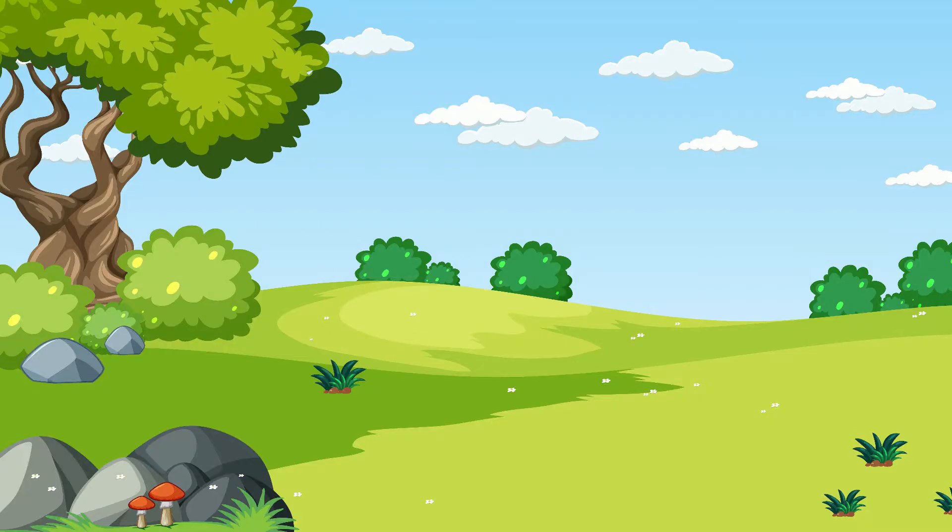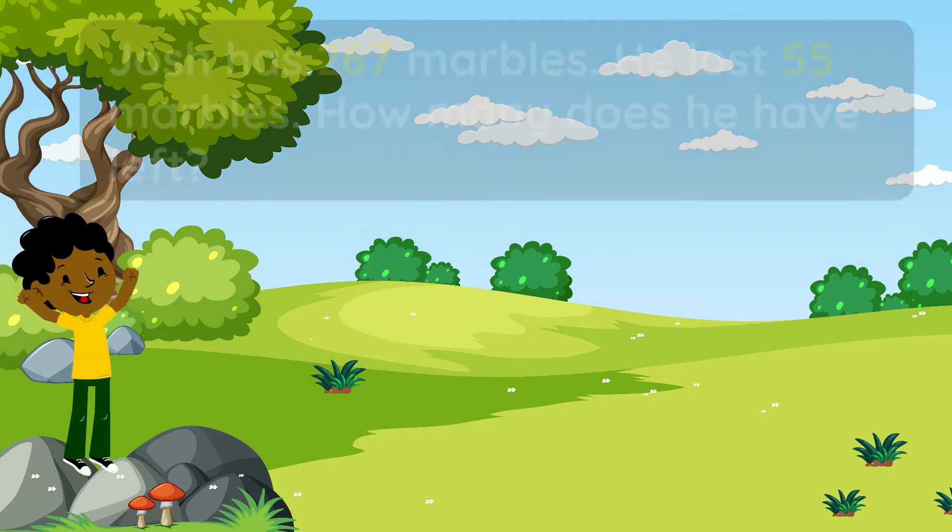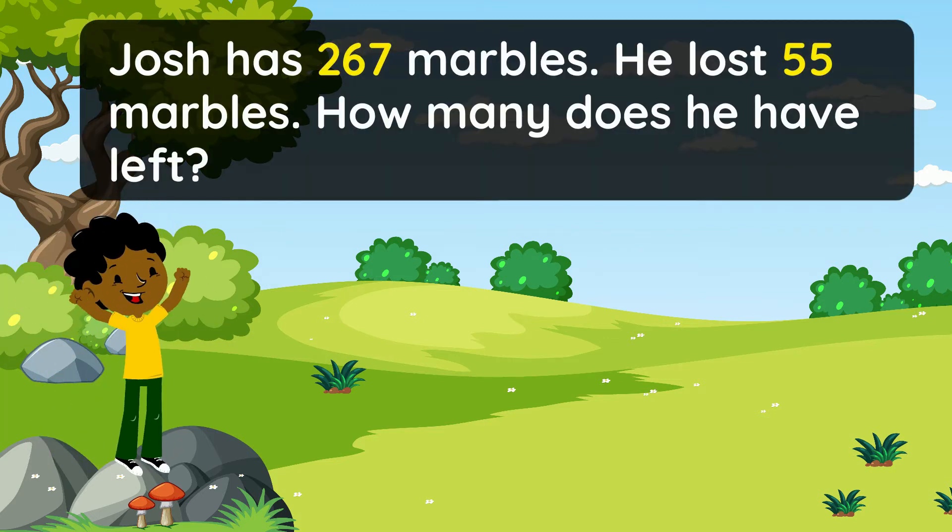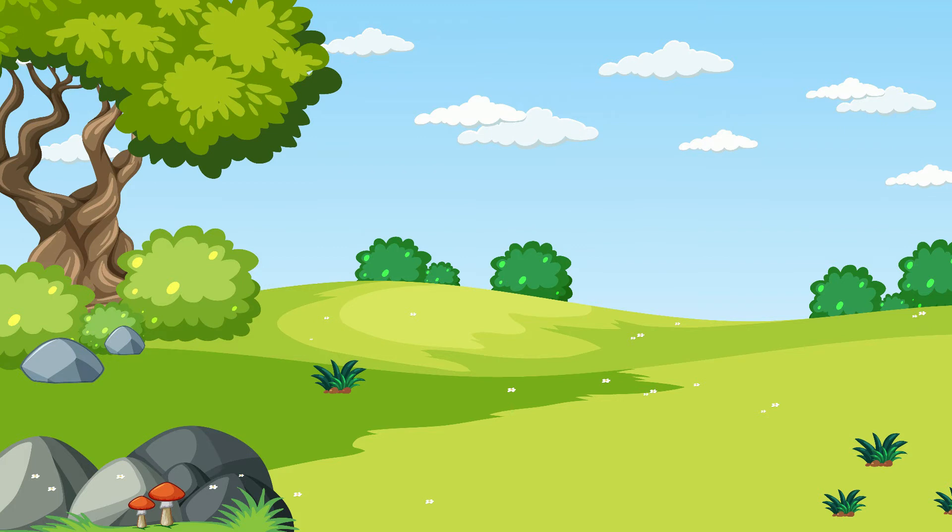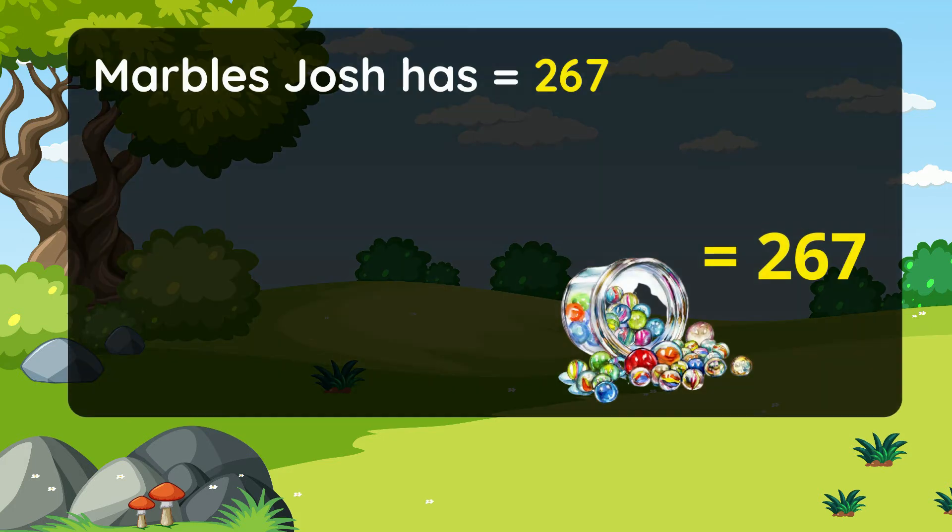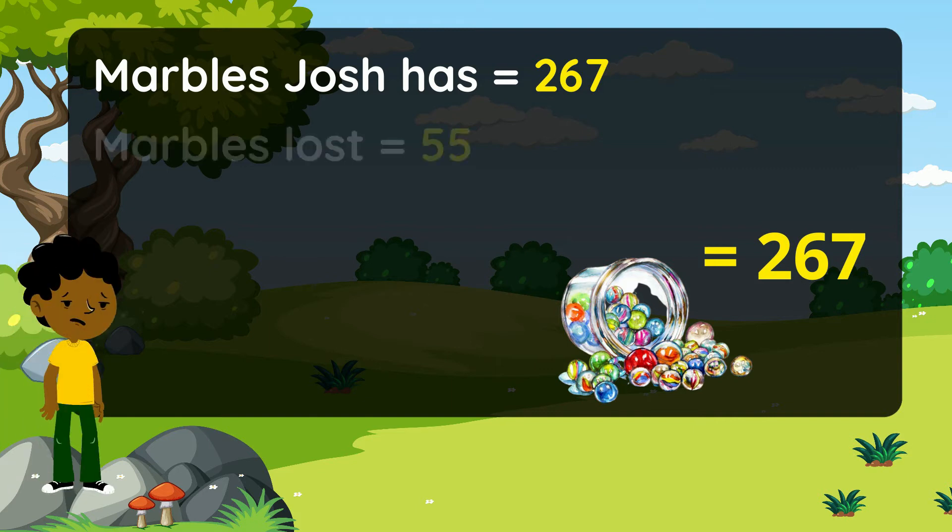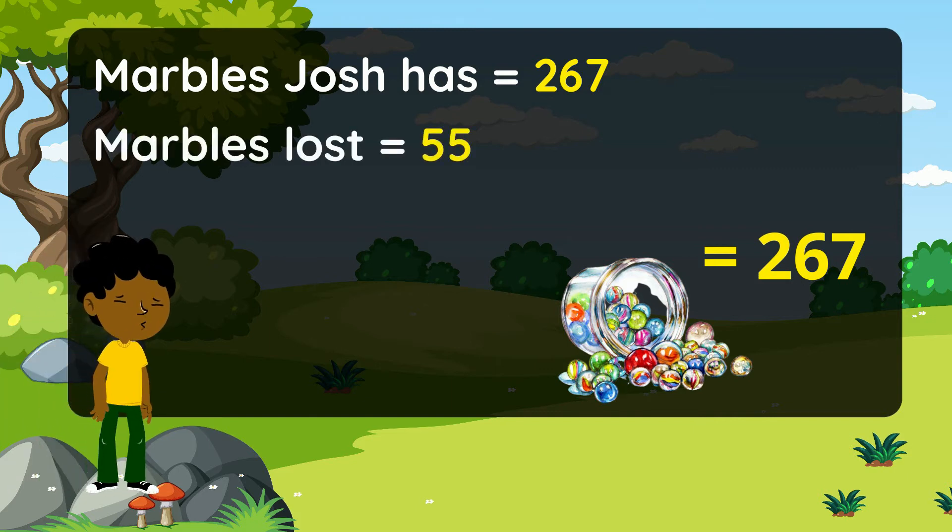Our first example is Josh has 267 marbles. He lost 55 marbles. How many does he have left? Let's create a statement to help us. Marbles Josh has equals 267. Marbles lost equals 55.